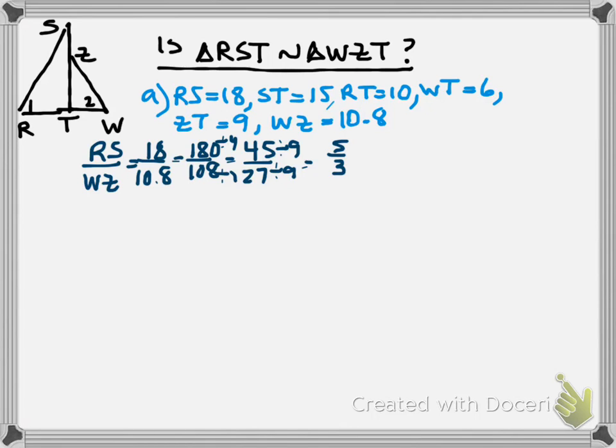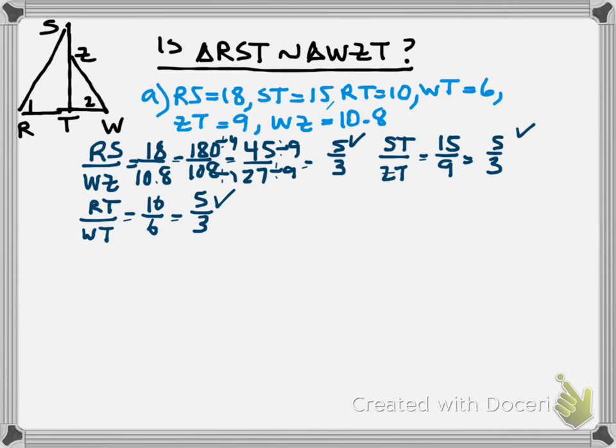The next one shouldn't be so bad because I don't have to contend with the decimals. So let's do ST over ZT. ST is 15, ZT was 9. They have a 3 in common, 5 to 3. So far we have good matches. We need the last one to break the tie and that would be RT to WT. RT was 10 and WT was 6. They both are even and divide out of 2 and I get 5 to 3. Since all of these are the same ratio we can say yes, triangle RST is similar to triangle WZT, and it's by the SSS similarity theorem.